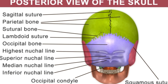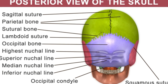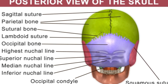Forming the posterior surface of the skull, the occipital bone articulates with the two parietal bones, sphenoid bone, two temporal bones, and the atlas — the first cervical vertebra. The term occipital is derived from the Latin word 'occiput,' which comes from the prefix 'ob,' meaning against, and 'caput,' meaning head. The prominent features of the occipital bone include the external occipital protuberance, the occipital condyles, and the superior and inferior nuchal lines.